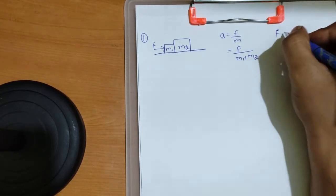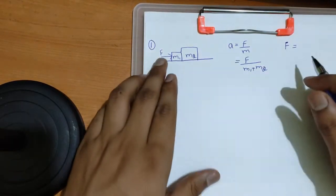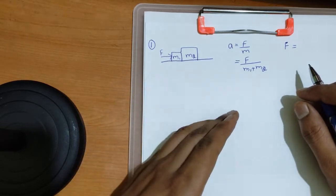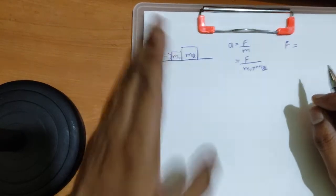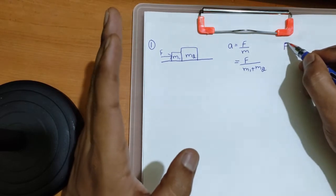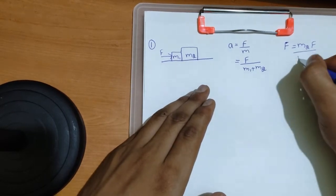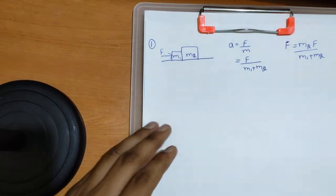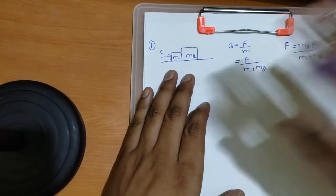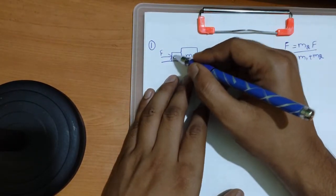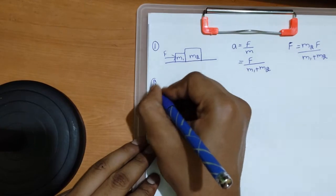The main problem comes for writing the contact force. Now I'll be telling you the trick: wherever the force is being applied, you forget about that block. On whichever block the force is being applied, you forget that block while writing the contact force expression. Write the remaining block — that adjacent mass — and the force applied divided by the sum of the masses. That is the contact force.